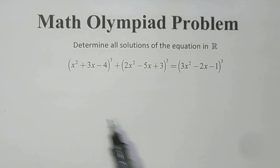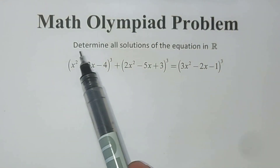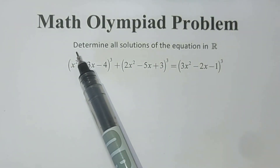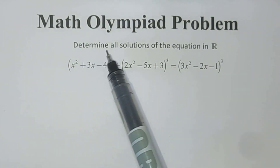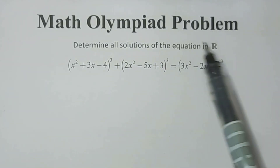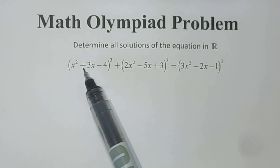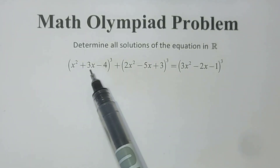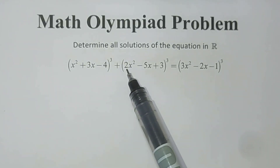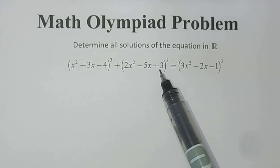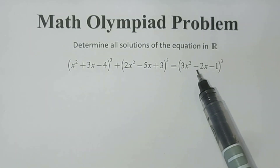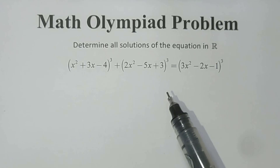Hello everyone. Here is my Math Olympiad problem: determine the solution of the equation in R with (x² + 3x - 4)³ + (2x² - 5x + 3)³ = 3(x² - 2x - 1)³.